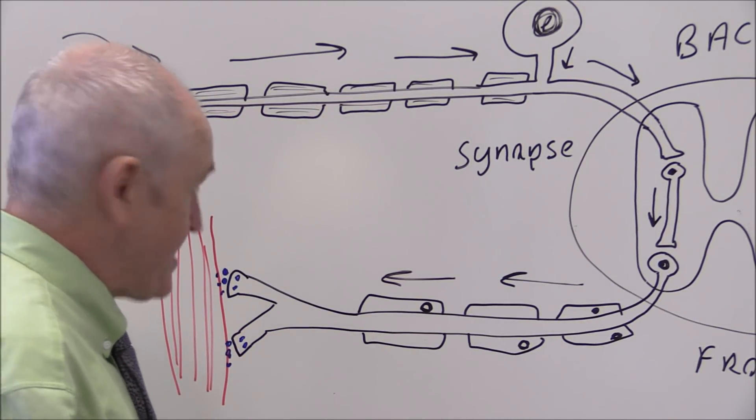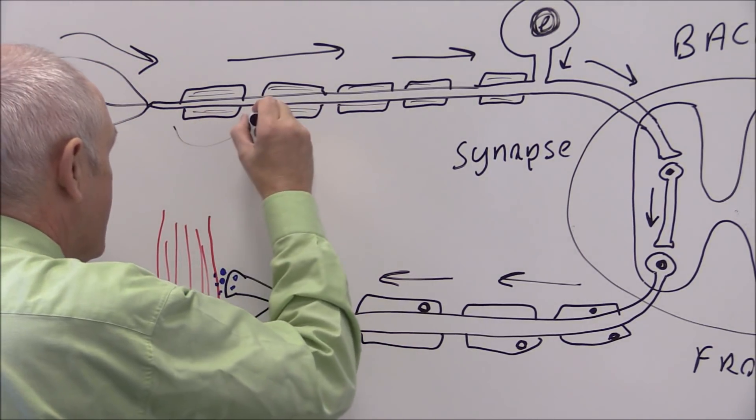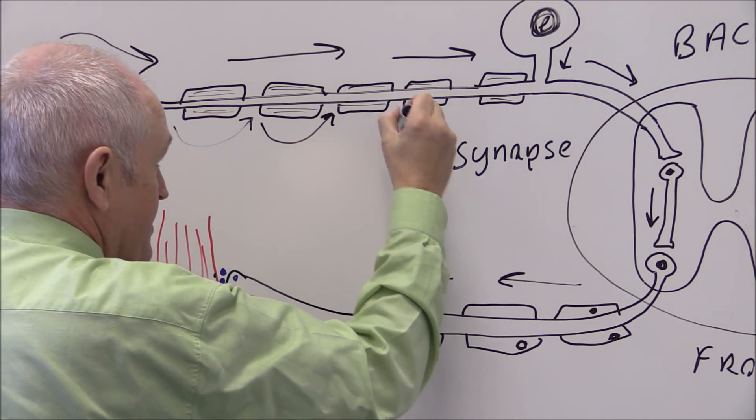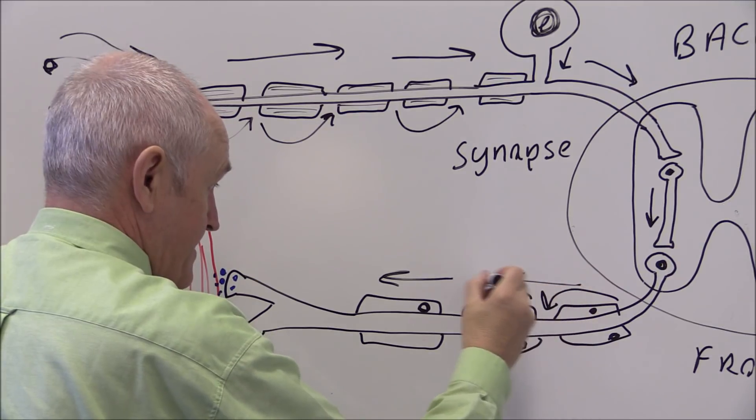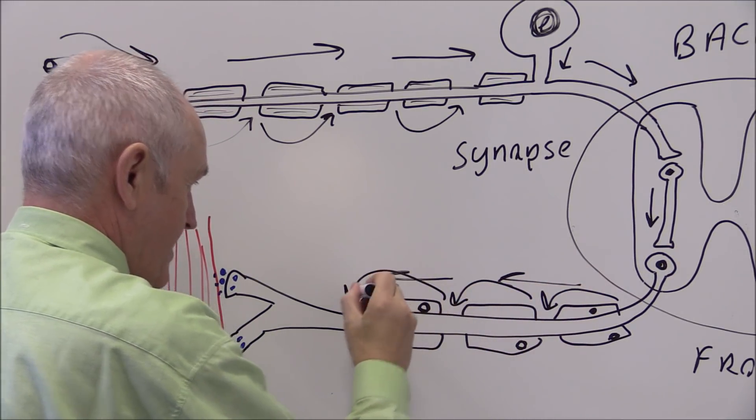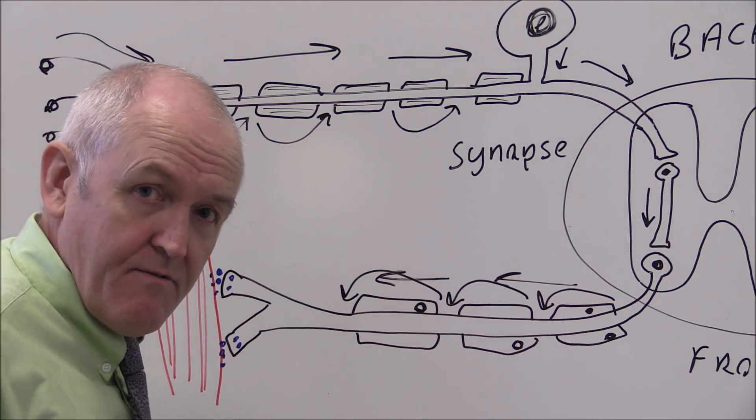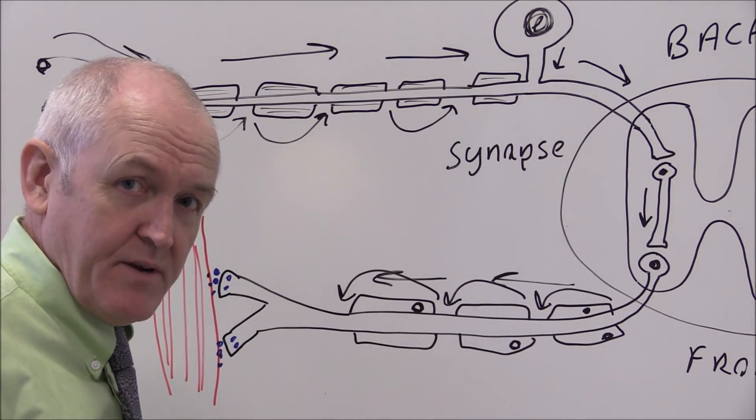And of course the transmission is this very rapid saltatory transmission, maybe 100 meters per second, bouncing from one node of Ranvier to the next, meaning that this can all happen very quickly to stop us from being injured.